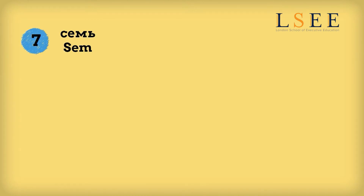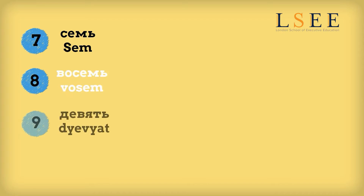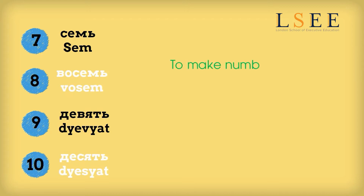6, 7, 8, 9, 10. To make numbers from 11 to 20, we add a suffix.